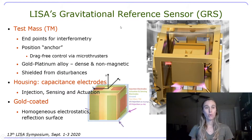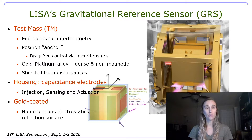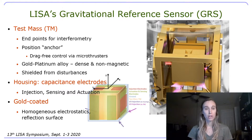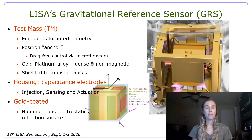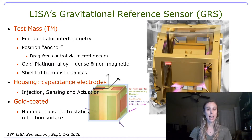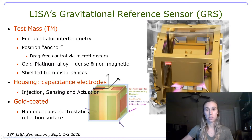So just a brief overview as to what LISA's gravitational reference sensor is composed of. It consists of a test mass, which acts as the endpoints for the interferometry measurement. The test mass also acts as a position anchor and enables drag-free control via LISA's microthruster. It's composed of a gold-platinum alloy, which is dense and non-magnetic. It's shielded from disturbances through its housing, which is composed of capacitance electrodes, which you can see here in the graphic in silver color.